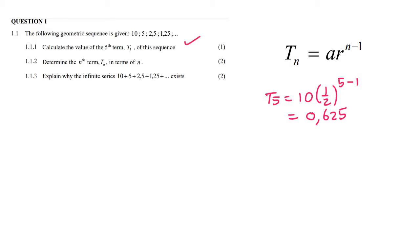For question 1.1.2, determine the nth term. You use the formula again but don't fill in a number for n. So it's T_n equals 10 times one half to the power of n minus 1. That's the answer for 1.1.2.